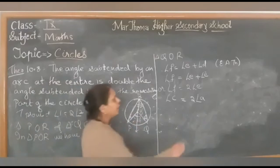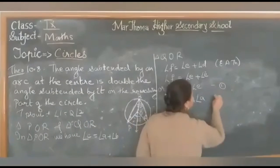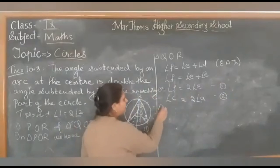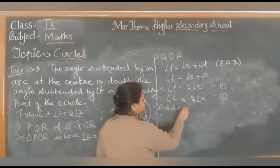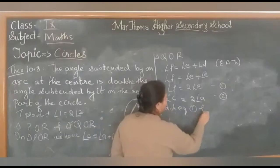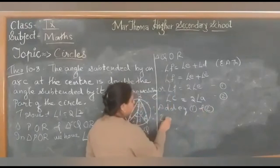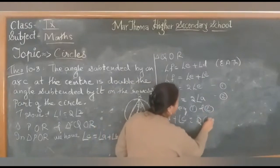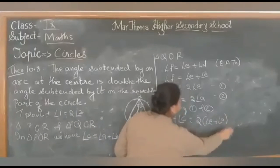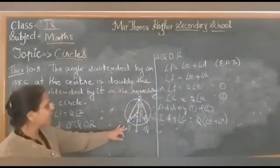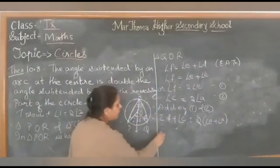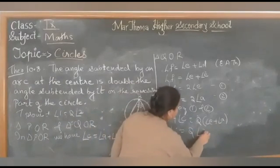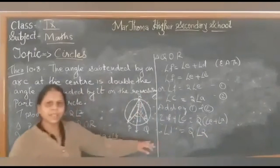Now, if this is equation 1 and this is equation 2, we can add them. Angle F plus angle C equals 2 times angle E plus 2 times angle A. But angle F plus angle C is angle 1, and angle E plus angle A is angle 2. Therefore, angle 1 equals twice angle 2.